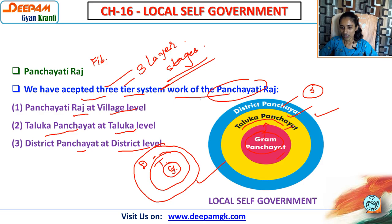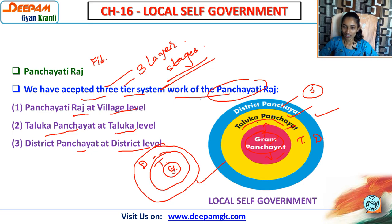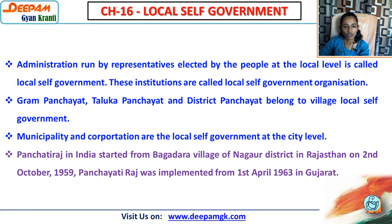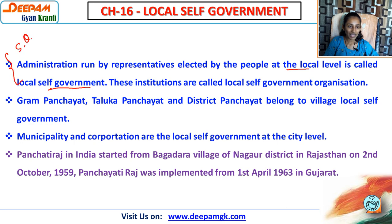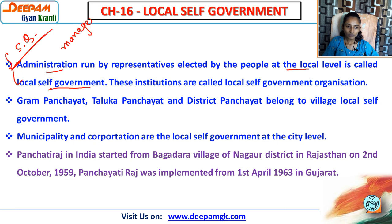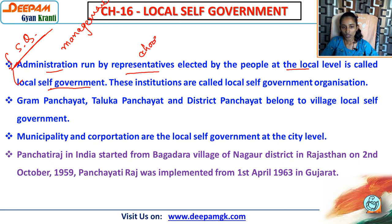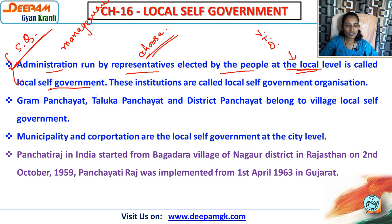To summarise: gram panchayat at gram level, taluka panchayat at taluka level, and district panchayat at district level. We will have to learn all three in detail in this video. Administration run by representatives elected by people at the local level is called local self-government. Management runs by representatives - those who we choose to represent us - elected at village level, taluka level, and district level.